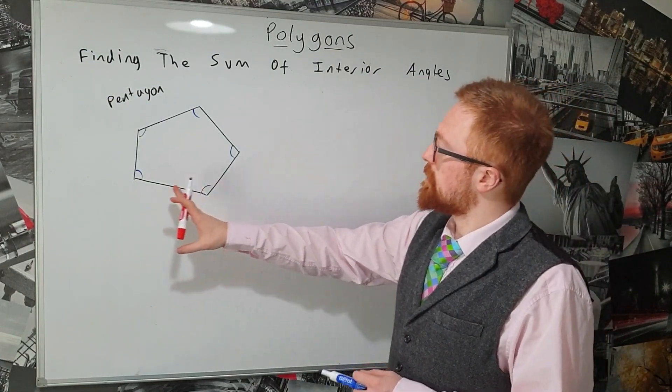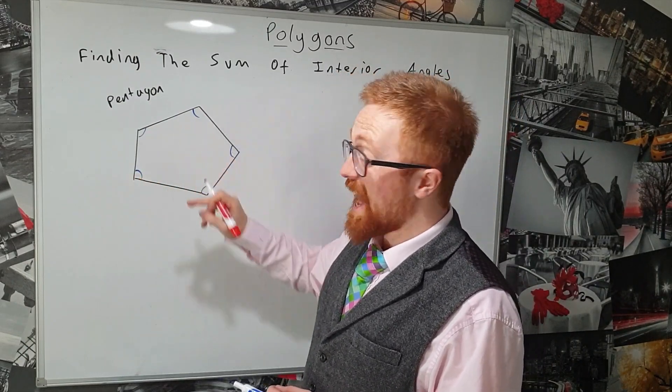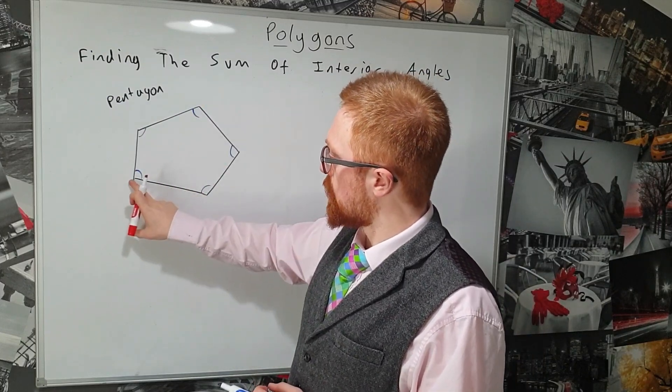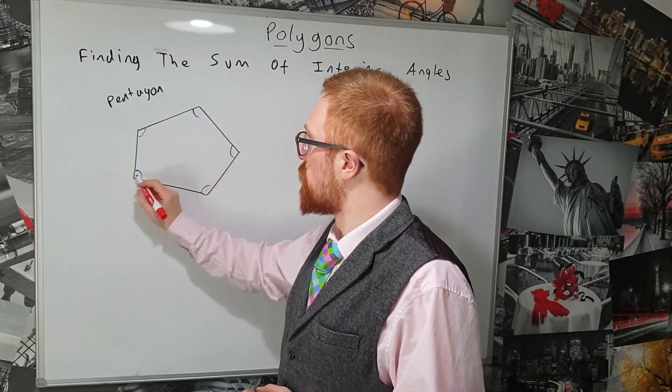So our strategy is going to be to split this into triangles. Now we don't want to create any extra angles when we split it into triangles, so we must always start from one of the corners of the shape and go to a different corner of the shape.